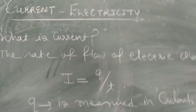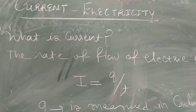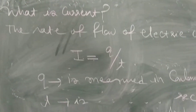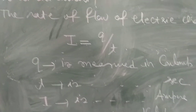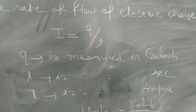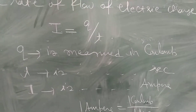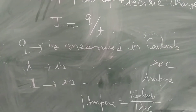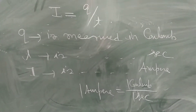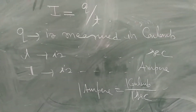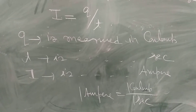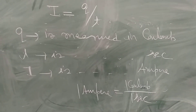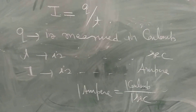I is equal to Q upon T. Q is measured in coulomb, T is measured in second, then I is measured in ampere. So 1 ampere is equal to 1 coulomb per second.